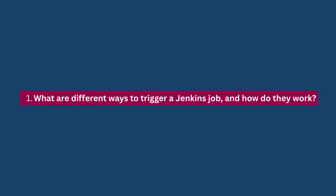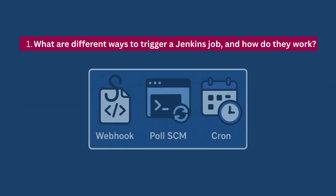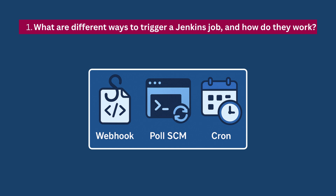Starting with question number one: What are the different ways to trigger a Jenkins job, and how do they work? Here are three common methods: Poll SCM, Webhooks, and Cron.